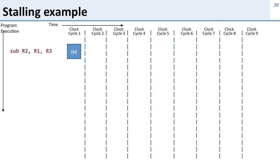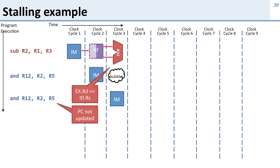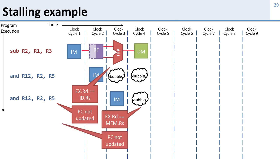Let's look at an example. We start executing our instructions, and in clock cycle three, our logic detects that the execute stage's destination register equals the decode stage's source register — we're going to have a hazard. We go ahead and insert a bubble, converting the AND instruction into an instruction that doesn't write anything. Because we've inserted a bubble, our PC is not updated, so in the next cycle we have the same instruction again. In the following cycle, we detect that the execute stage destination matches the memory stage source — so we need another bubble and insert it.